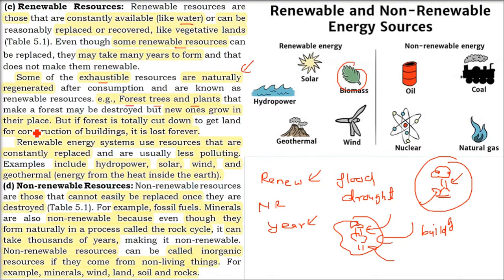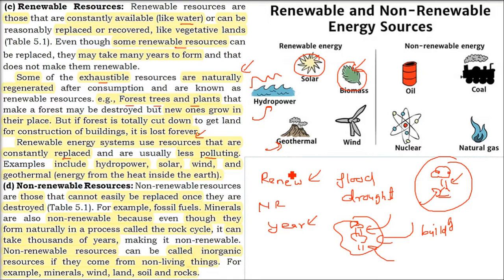Renewable energy systems are those that produce energy and can be replaced. They are also less polluting. Examples include solar energy, hydropower, geothermal energy, and biomass. Geothermal energy comes from the heat inside the earth — 'geo' means globe or earth and 'thermal' means heat — so this energy comes from inside the earth.